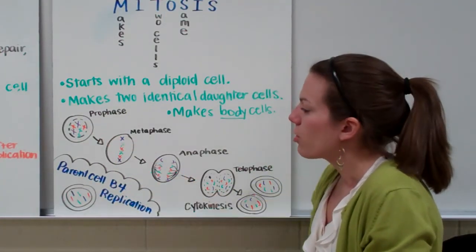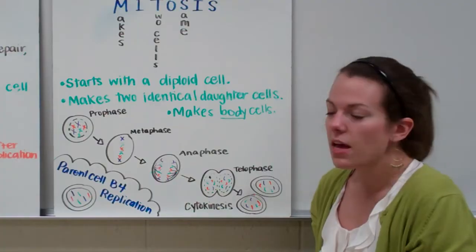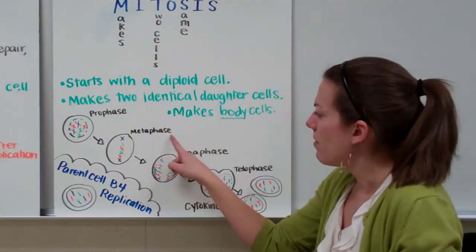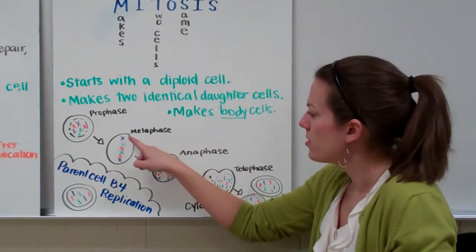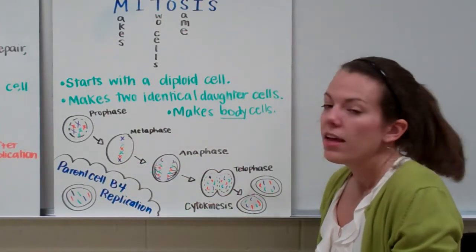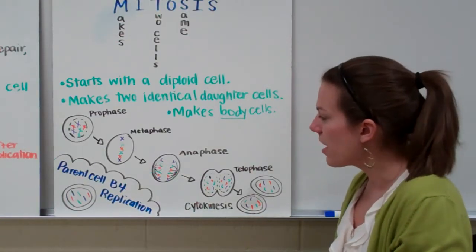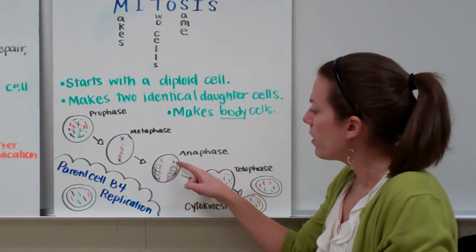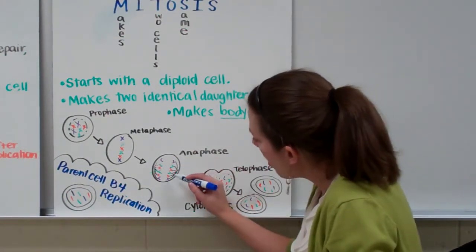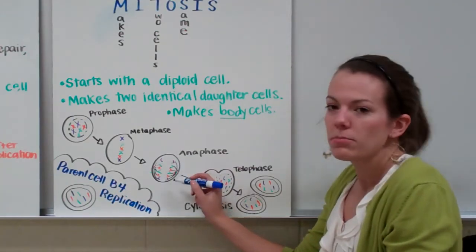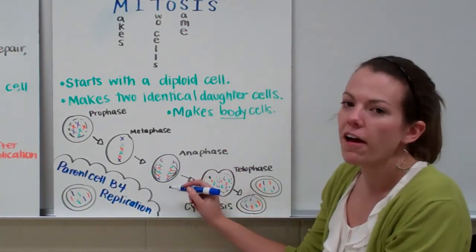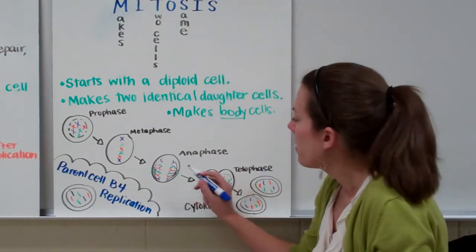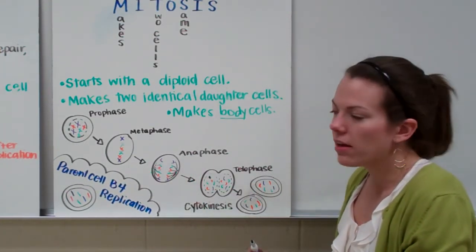Our next step is when our chromosomes line up in the middle of the cell. Middle starts with an M — that will remind you of the name of this phase: metaphase. The chromosomes have lined up in a single file line down the middle of the cell. The next thing that happens is anaphase. During anaphase, the chromosomes are moving apart. The spindle fiber pulls the chromosomes apart and separates the sister chromatids. Apart starts with an A, and so does anaphase.